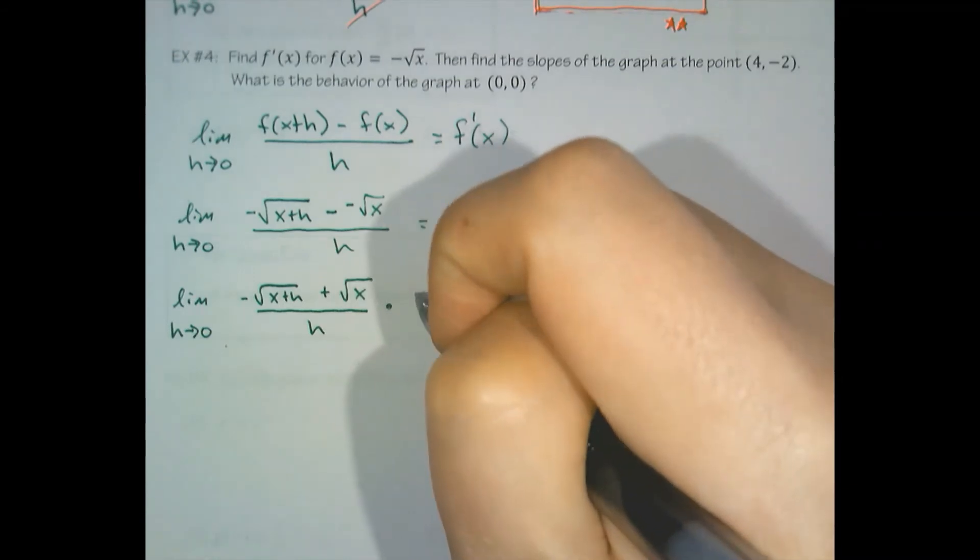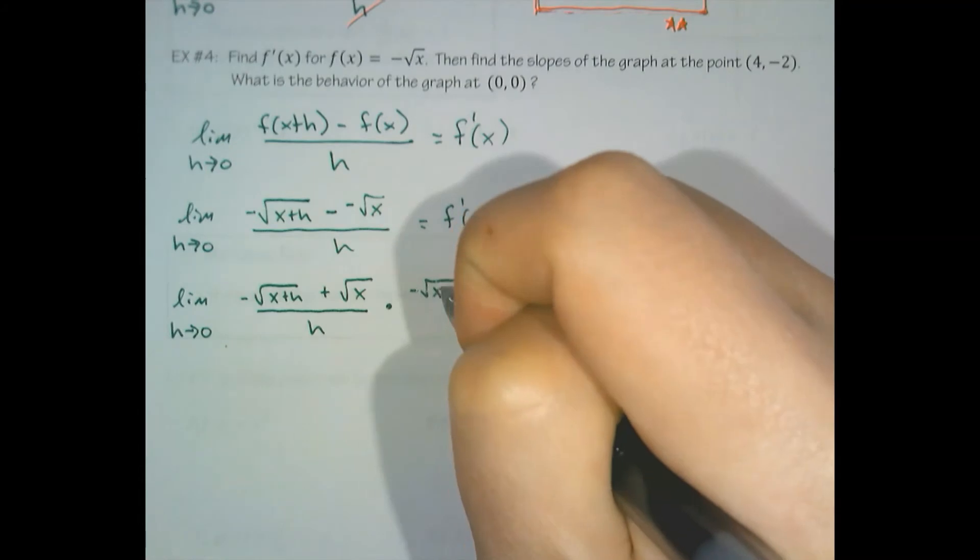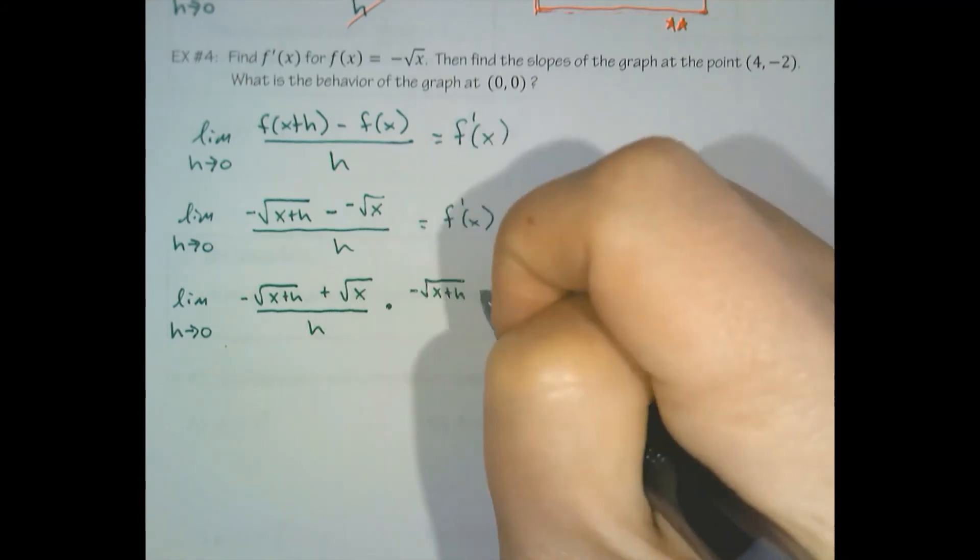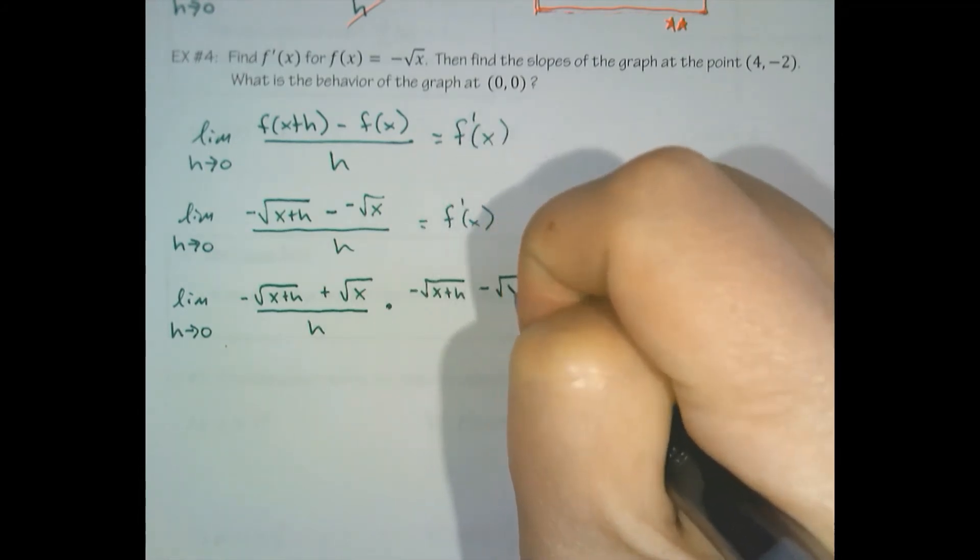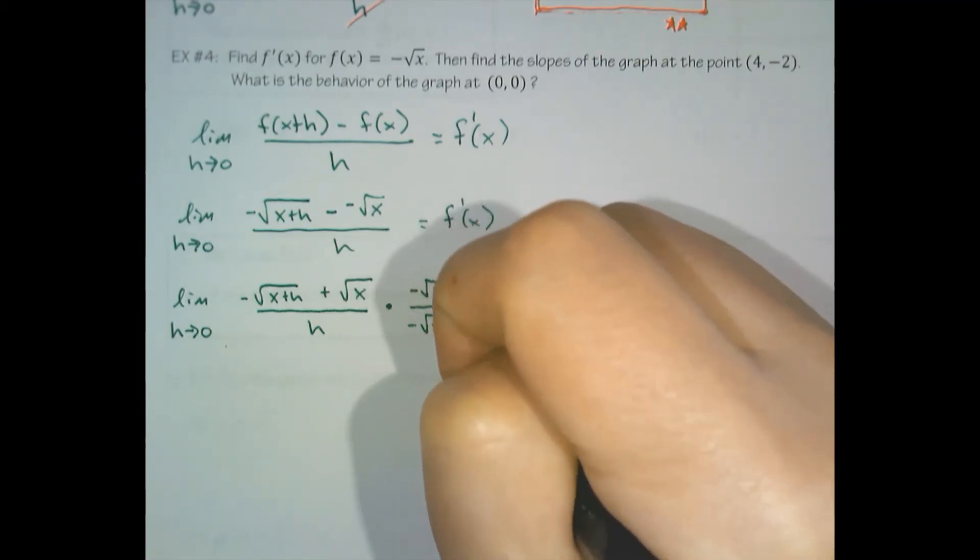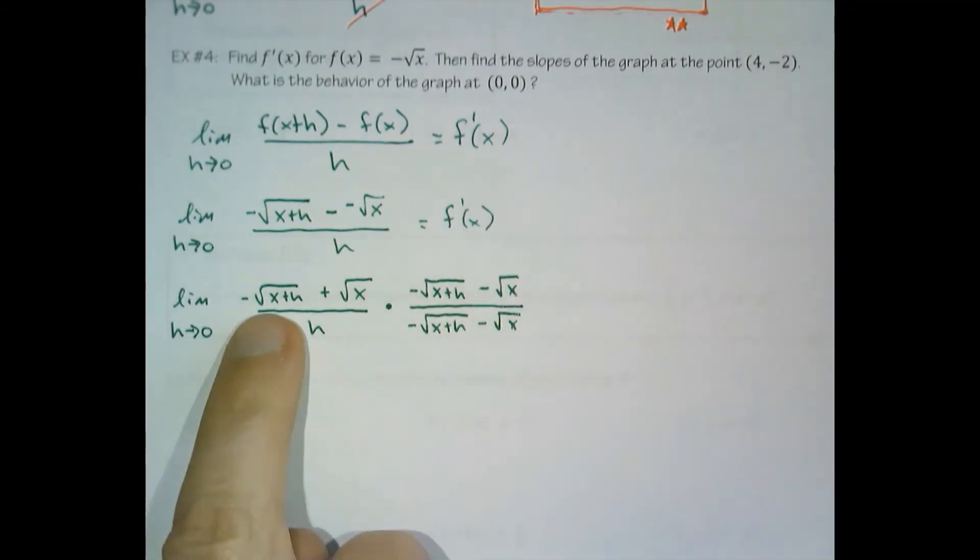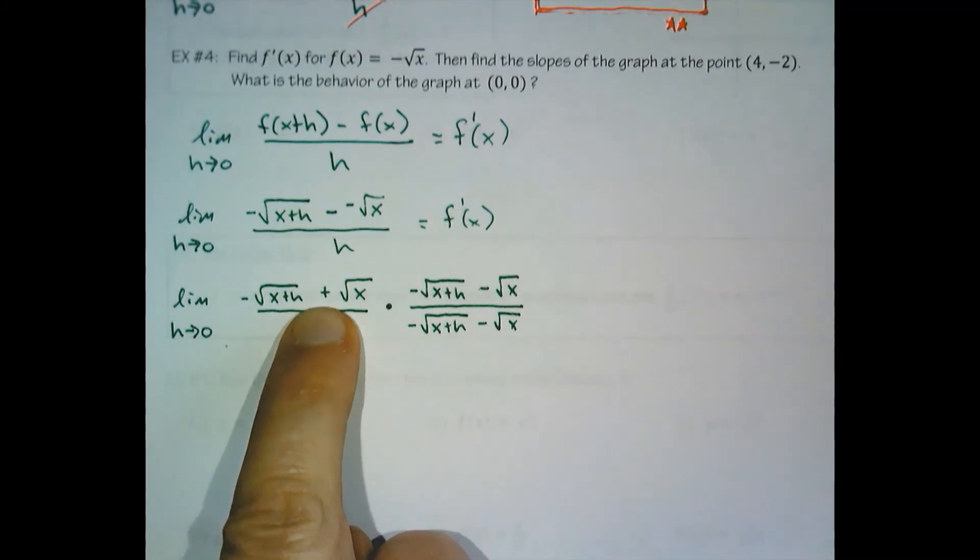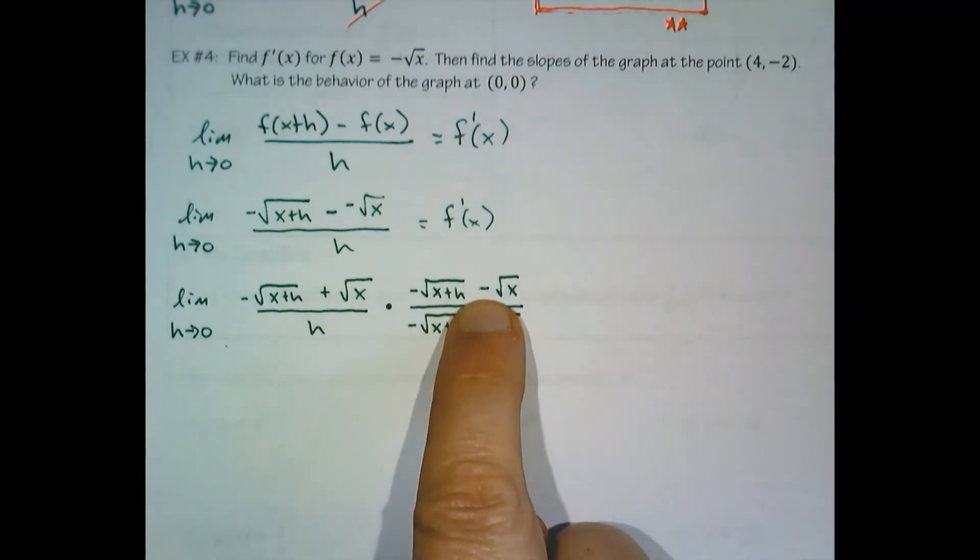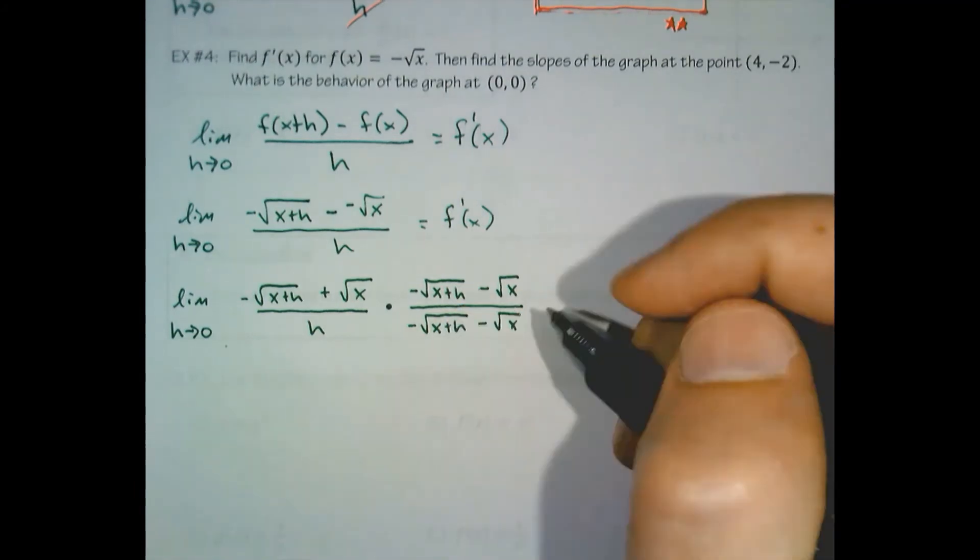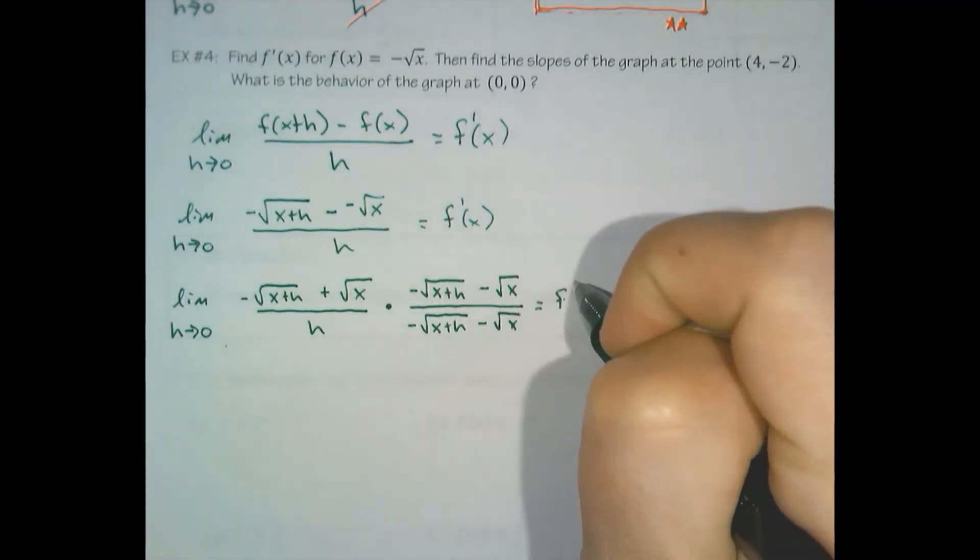The technique that we used is we multiplied the numerator and the denominator by the conjugate. And this is why I am thankful that we're going to learn shortcuts in the future because this thing just looks needlessly challenging. The conjugate consists of taking the same expression and then flipping the sign. In this case, it was add, so we made it a minus.